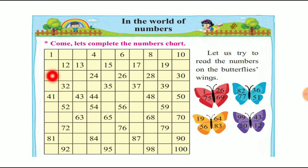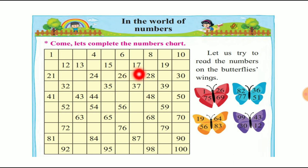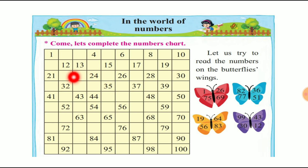Next numbers: 11, 12, 13, 14, 15, 16, 17, 18, 19, 20. So this is the number chart. The number chart is complete — there is a serial order from 11 to 20.